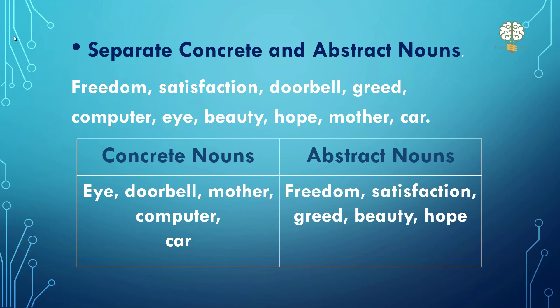So from these, the concrete nouns we have separated are the ones you can touch or smell. All of the ones here can be touched. So eye, doorbell, mother, computer, and car — they are concrete. And abstract: freedom, satisfaction, greed, beauty, hope. You cannot touch them — in terms of senses, you cannot perceive them, you can only imagine them.